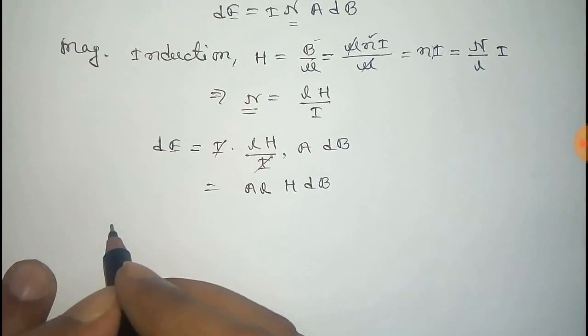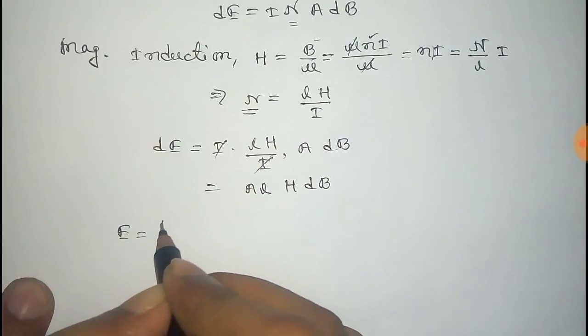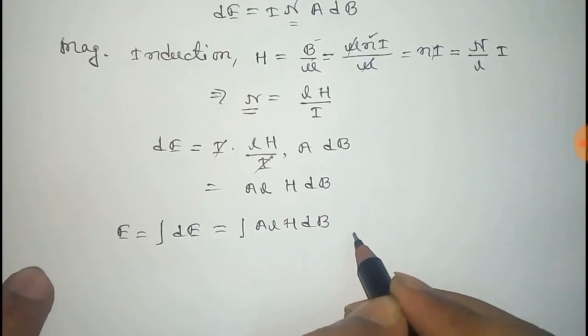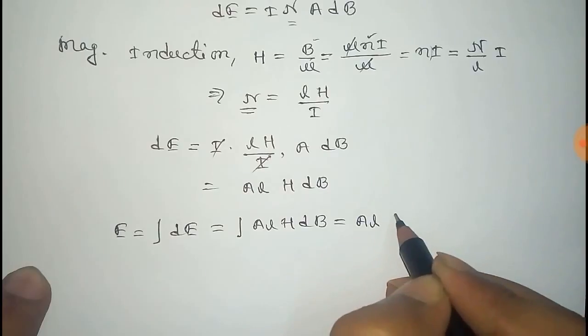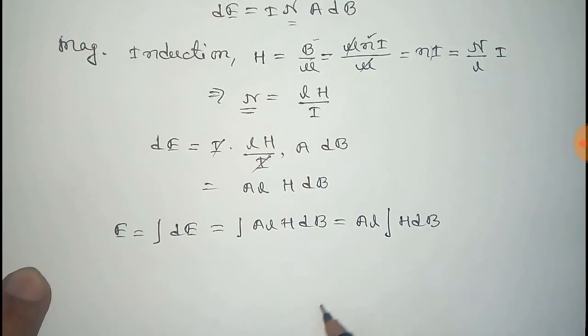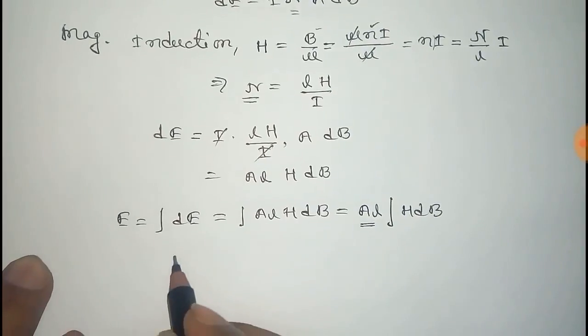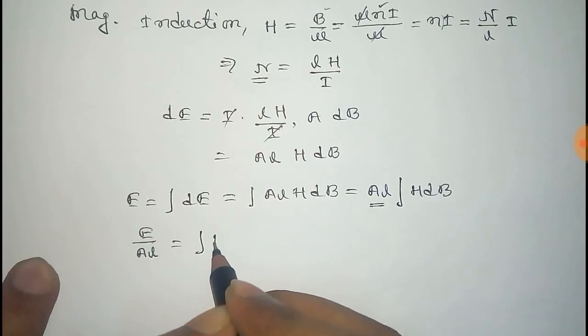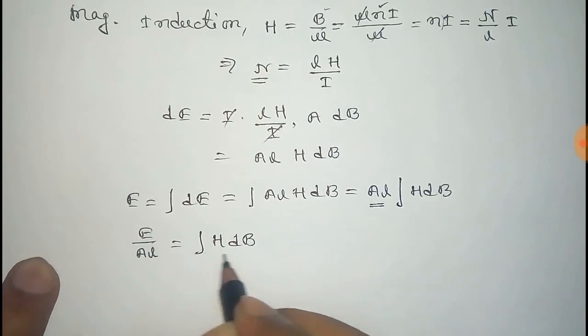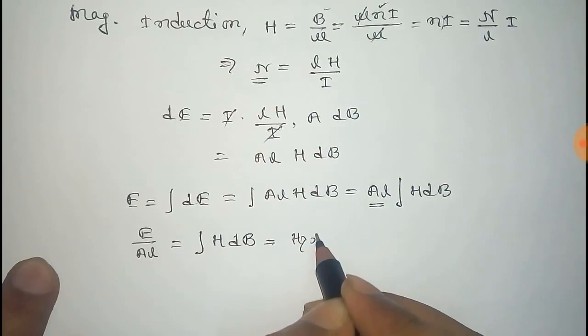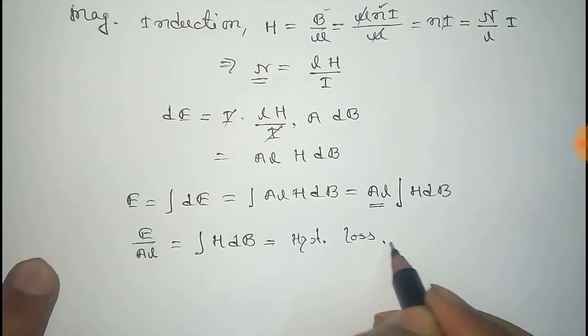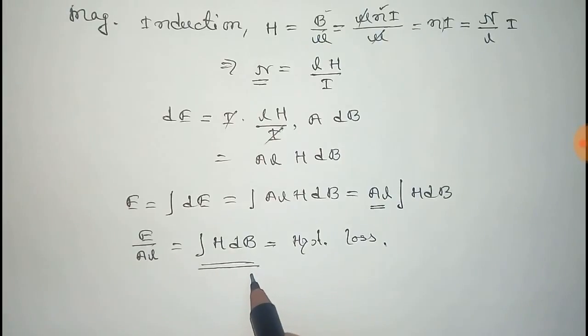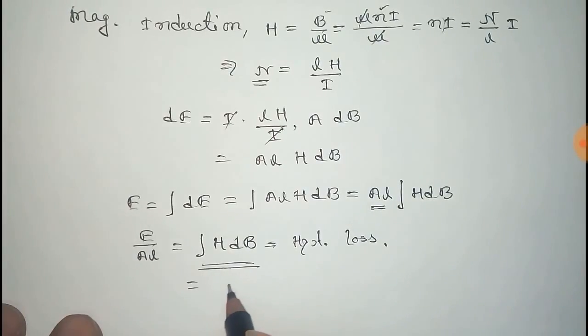Now the total energy loss E equals integral of dE equals integral A L H dB. Here A and L are constant, so it comes out of integration, and remaining is H dB. Here you can see that A L is the volume, so the energy loss per unit volume can be written as E by A L equals integral of H dB. Now you can see that this is the energy loss per unit volume, and this is also the hysteresis loss. And on the other side, you can see that this is the area enclosed by the B-H loop. So this is the term for hysteresis loss.